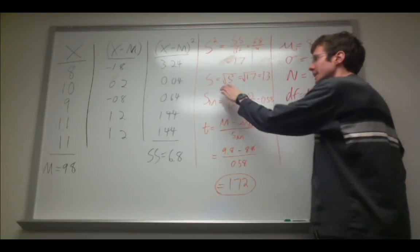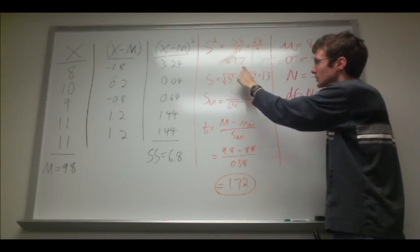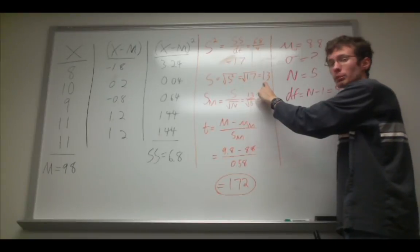Next step, to get the standard deviation, the estimated standard deviation, we simply take the square root of the variance, or square root of 1.7, and we get a value of 1.3.